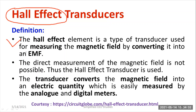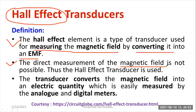The Hall effect element is a type of transducer used for measuring the magnetic field by converting it into an EMF. The direct measurement of magnetic field is not possible, so you measure the magnetic field in terms of electromotive force (EMF). For that purpose, we use Hall effect transducers.